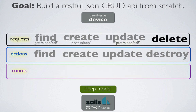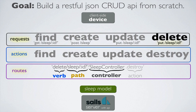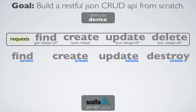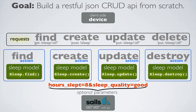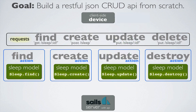And finally, the delete request will use the verb DELETE with the path slash sleep and bind to the sleep controller and the destroy action. The actions will then use the model methods to find, create, update, or destroy the model as requested, and use the parameters hours slept and sleep quality to pass any necessary information within the request through the action to the model. The action will then respond with the request status as well as any model instance or instances required.